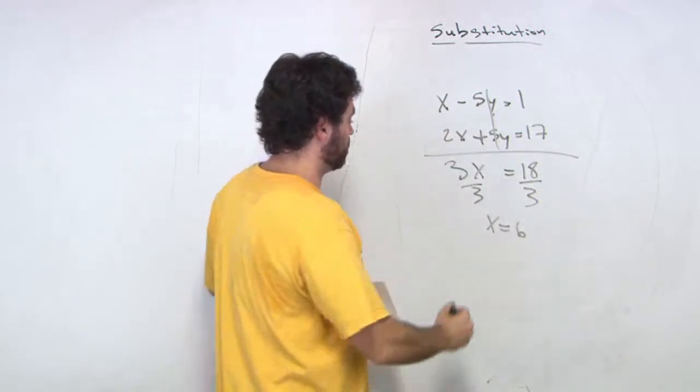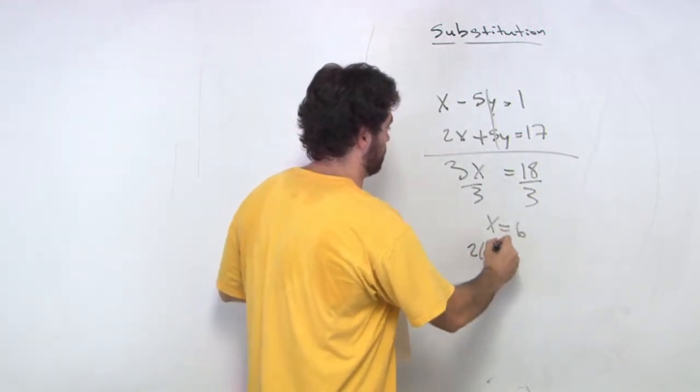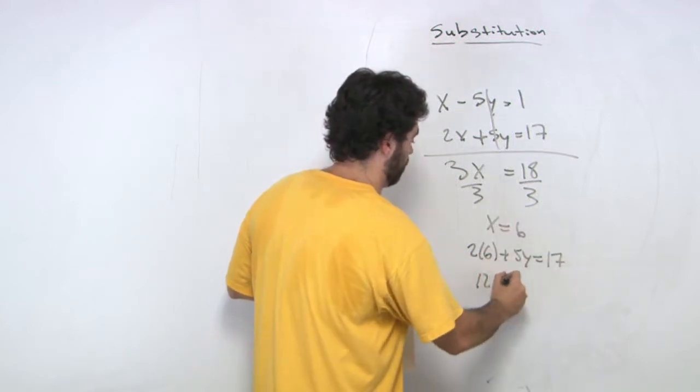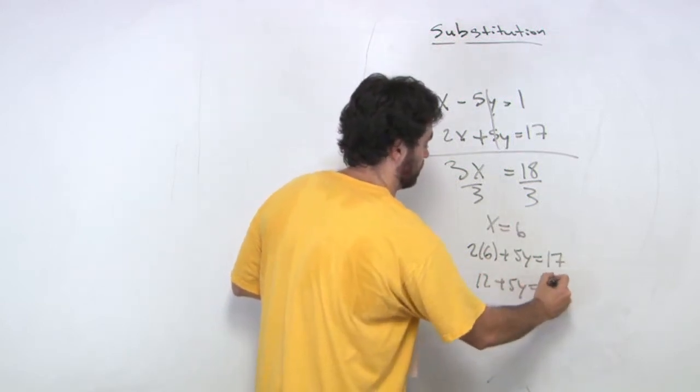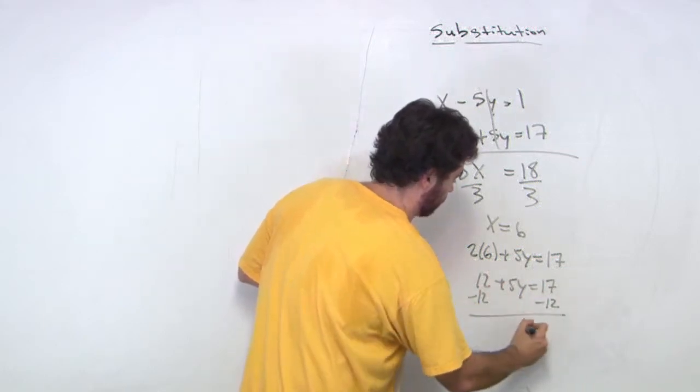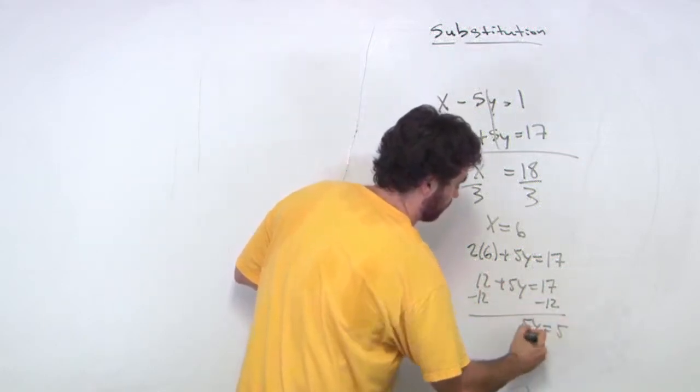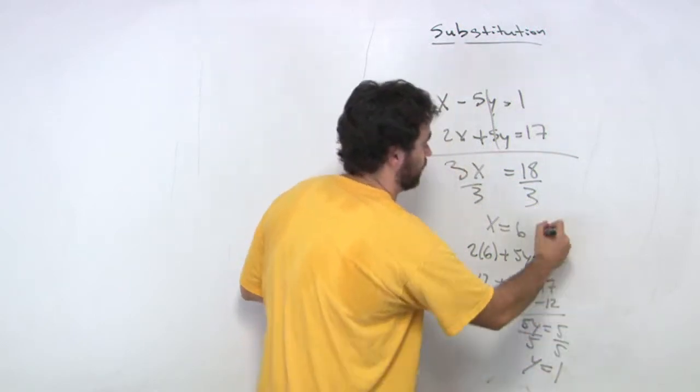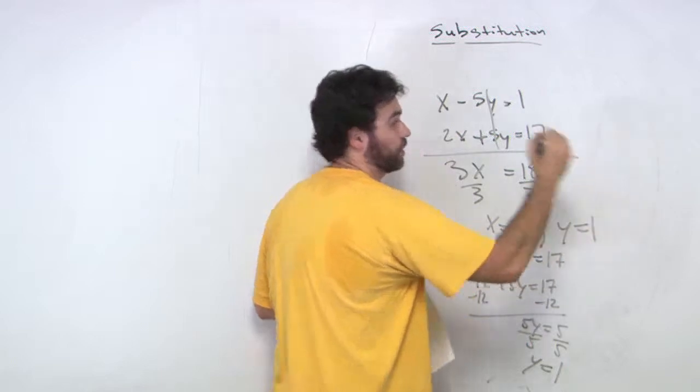Substitute back our 6 into this equation. So I say that 2 times 6 plus 5y equals 17. That's 12 plus 5y equals 17, minus the 12. We get 5y equals 5. Therefore, 5 divided by 5, and y equals 1. And there's our solution, y equals 1.